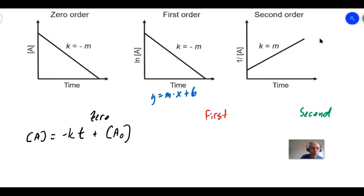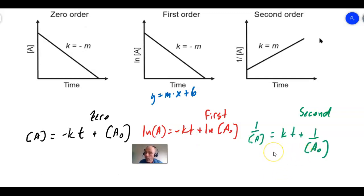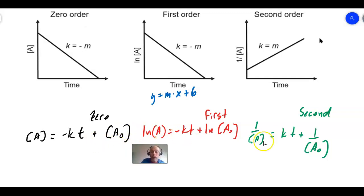For the first order graph, plugging into y equals mx plus b: instead of concentrations for y and the y-intercept, we use the natural log of the concentrations. So ln[A] equals negative kt plus ln[A]₀ - they look similar because the slopes are both negative k. For second order: the y-value and y-intercept become the inverse of concentration and inverse of initial concentration. This time there's no negative in front of k because the slope equals k for the positively sloping line. So here are the integrated rate laws for zero, first, and second order reactions.